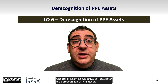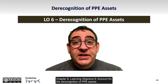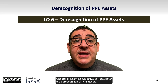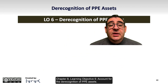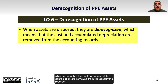Chapter 8, Learning Objective 6: Account for the Derecognition of PPE Assets. When assets are disposed of, they are derecognized, which means that the cost and accumulated depreciation are removed from the accounting records.